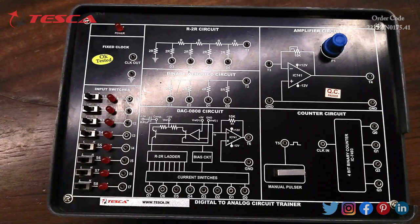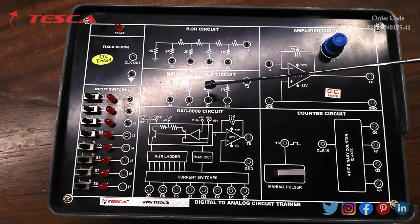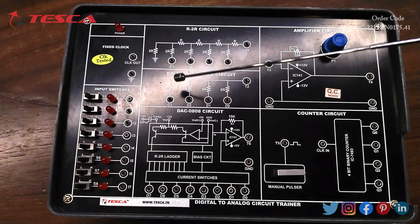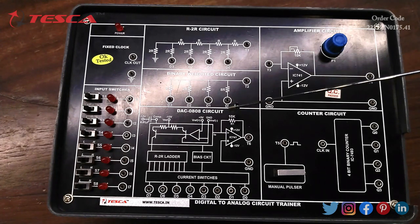Then we have the next block, binary weighted circuit. This is a circuit of combination of resistances. Input to this circuit is provided at D3, D2, D1, D0. Output is obtained at T2.